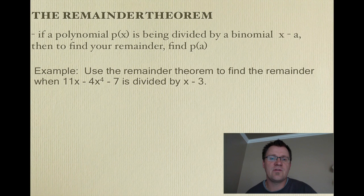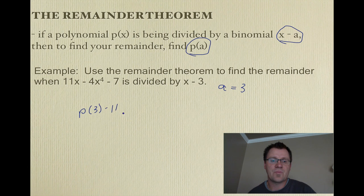Let's take a look at an example. It says, use the remainder theorem to find the remainder when 11X minus 4X to the 4th minus 7 is divided by X minus 3. This notation right here, P of A, just means that we take the value for A, and we plug it into our P function. Well, we know the value for A. The binomial, if it's written like X minus A, then A would be positive 3 in this case. So, we plug in a positive 3. We find P of 3.